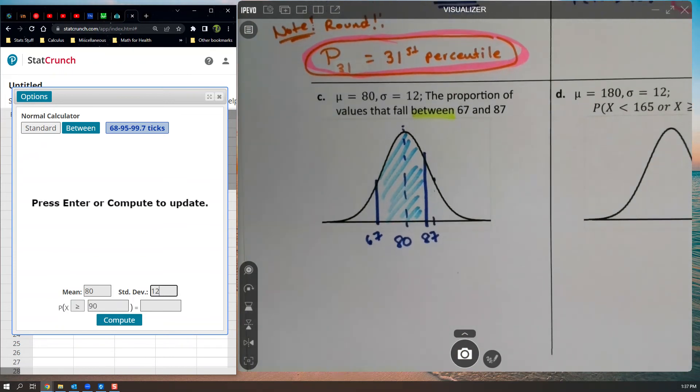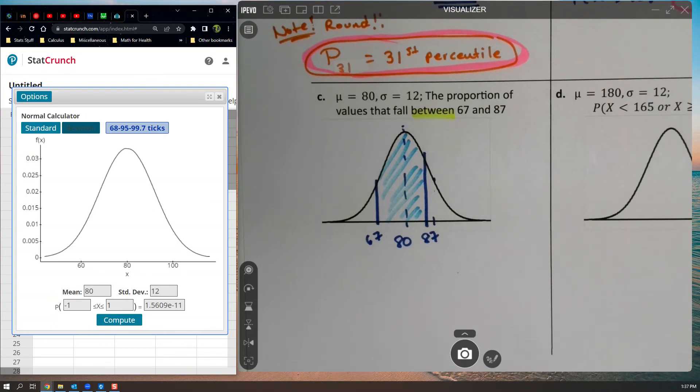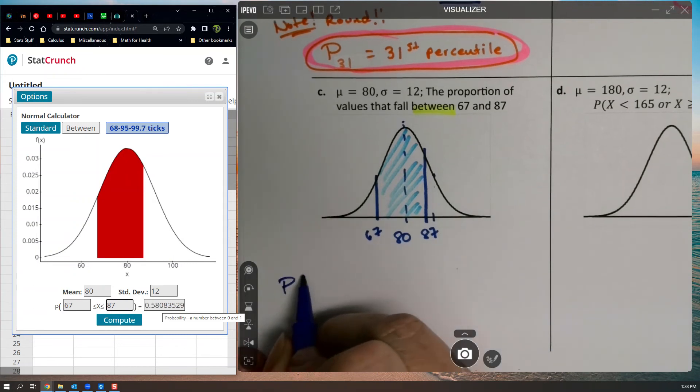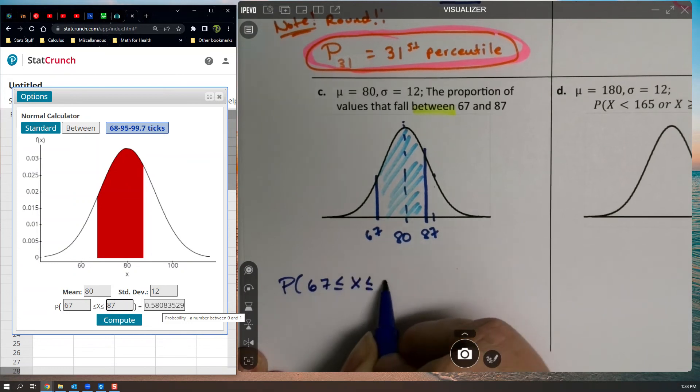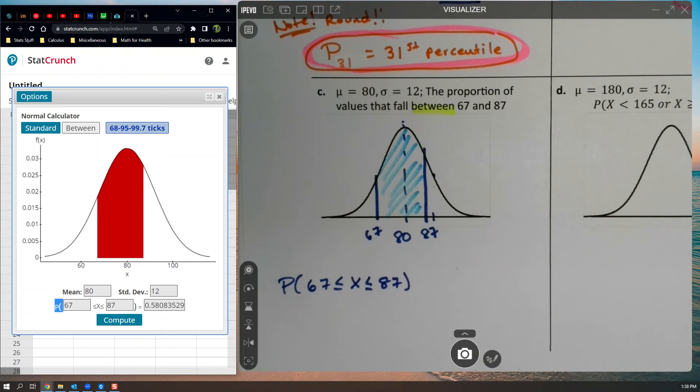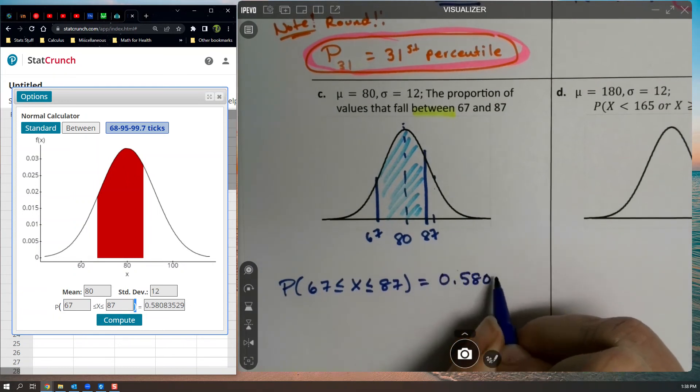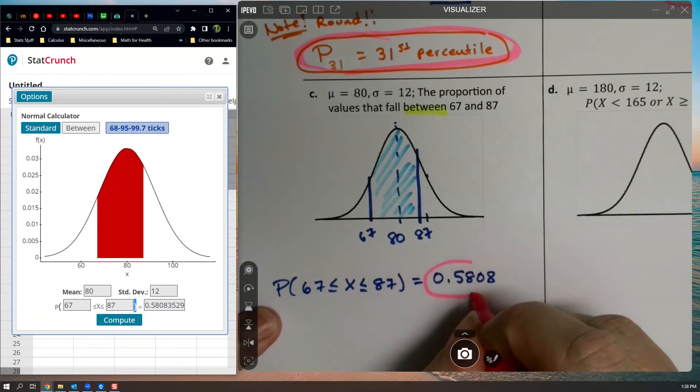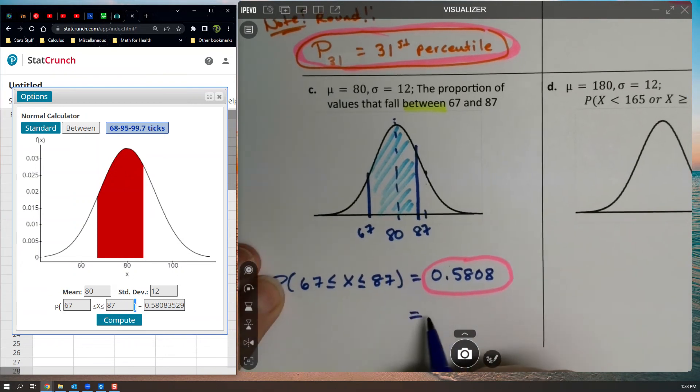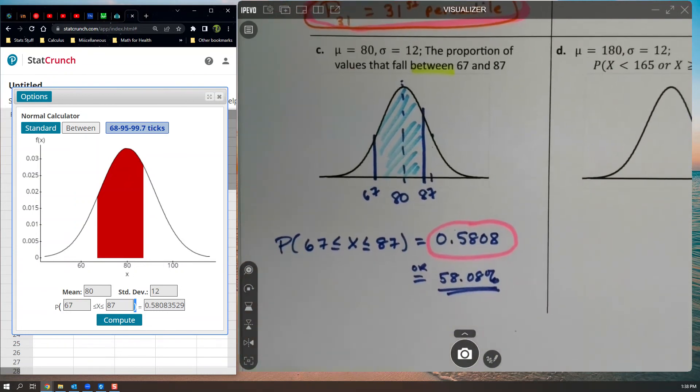So let me switch my normal calculator then. So I have an 80 and a 12 typed in. But I'm not doing a standard anymore. I'm doing a between. So let me switch it to between. I know the x values. I know the x value on the left is 67. And the x value on the right is 87. So I put those two values in and I press enter. And the picture matches. The picture looks like I think it's going to. And then I just have to write this down. The probability that 67 is less than or equal to x, which is less than or equal to 87, which is basically saying x is between those two, is 0.5808. And that's the answer. Now they wanted a proportion. So we could write it as 58.08% if you want to write the proportion as a percentage. That's fine.